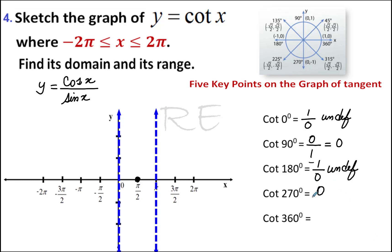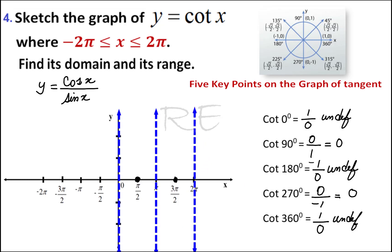Cotangent 270 is zero over negative one, which is zero. Cotangent 360 is one over zero, which is undefined — vertical asymptote. Now cotangent three pi over four is equal to negative one.